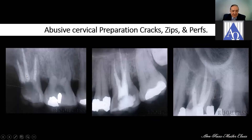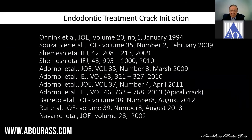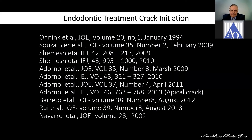This is abusive canal enlargement. What's important is what you do to the apical third, not the cervical third — the apical third. With these techniques, you see perforations, strips, et cetera. The bottom line: this is endodontic treatment crack initiation. Current evidence-based research shows that endodontic instrumentations create micro-cracks.